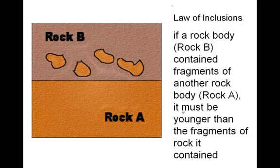Another one is called the law of inclusions. With the law of inclusions, if you have a rock layer and somewhere inside that layer are little bits and pieces from the rock layers below it, then it must be younger than the ones below it. Rock layer B has to be younger than rock layer A because it has bits and pieces of rock layer A in it — you can't put pieces of rock layer A into rock layer B if rock layer A is younger. It only makes sense.